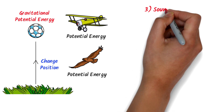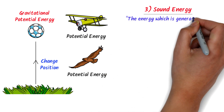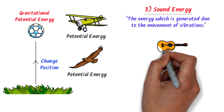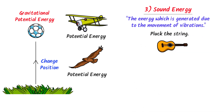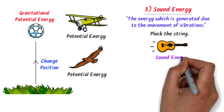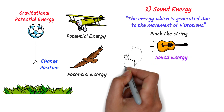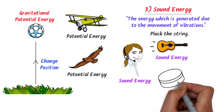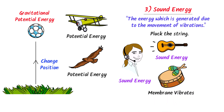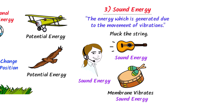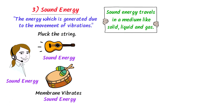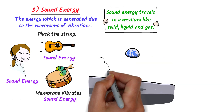The third form of energy is sound energy. The energy which is generated due to the movement of vibration is called sound energy. For example, consider a guitar — when you pluck the string of a guitar, the string vibrates and sound energy is produced. Similarly, we human beings also produce sound energy when our vocal cords vibrate. Thirdly, when we hit a drum, the membrane of the drum starts vibrating, and this vibration produces sound energy. Remember that sound energy travels in a medium like solid, liquid, and gas, while sound energy cannot travel in a vacuum.